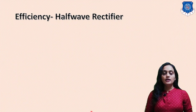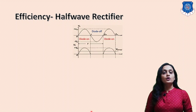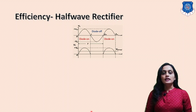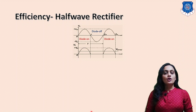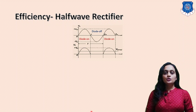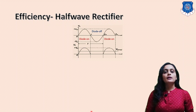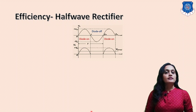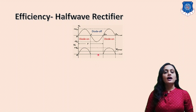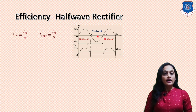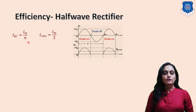First we will calculate the efficiency for the half wave rectifier. For any electronic circuit, efficiency is the ratio of output power to the input power being applied. In the rectifier, the input is a sinusoidal signal and the output is pulsating DC. The output signal waveform for the half wave rectifier is shown on screen, and the RMS and DC values of current for the output signal were already derived in the previous video.